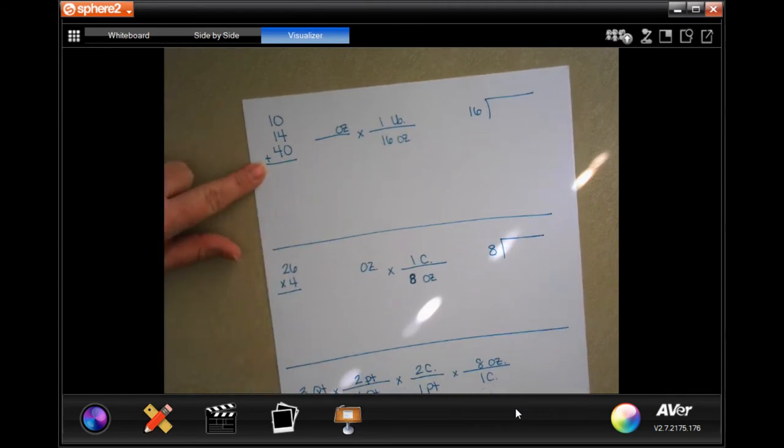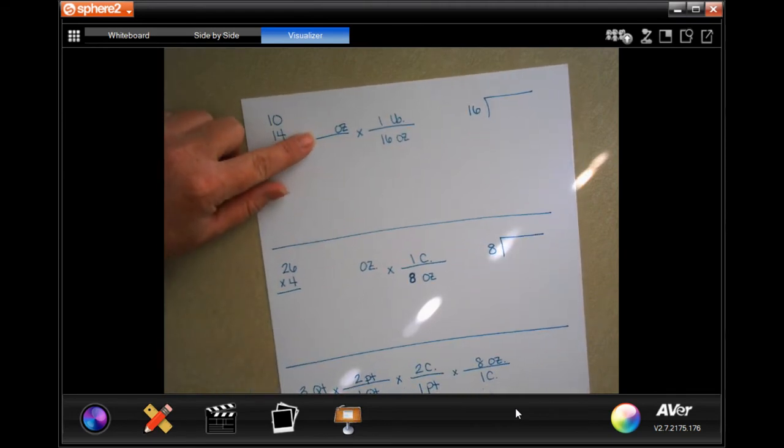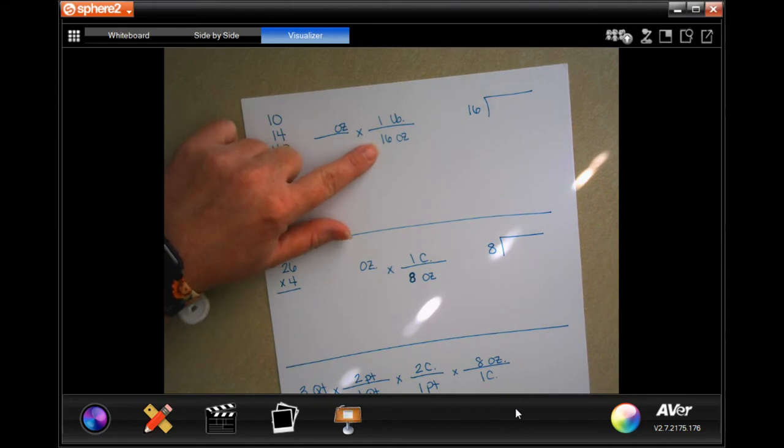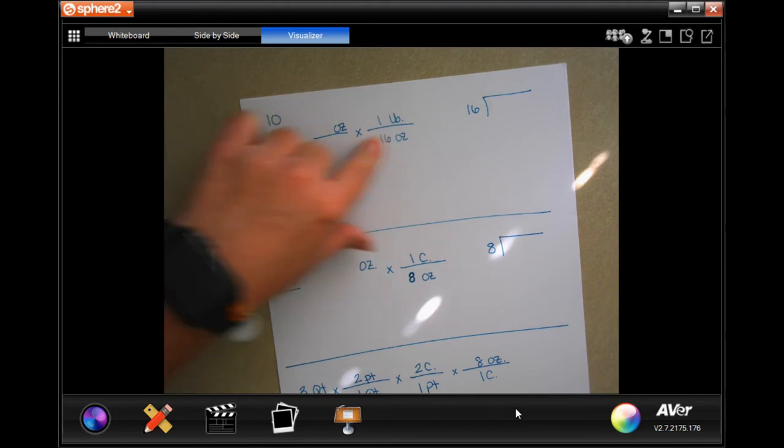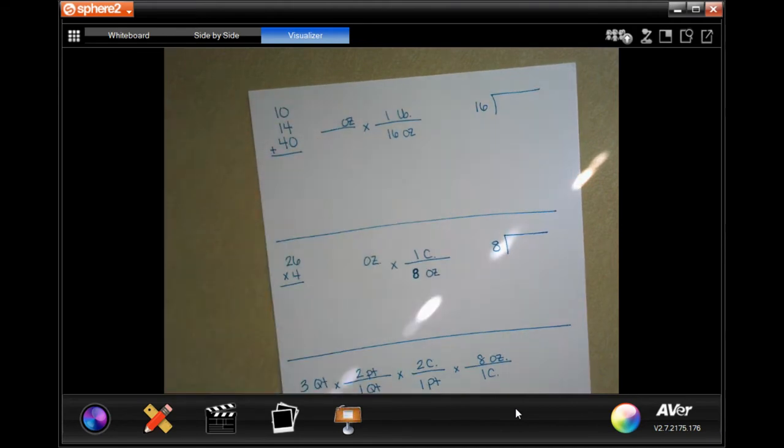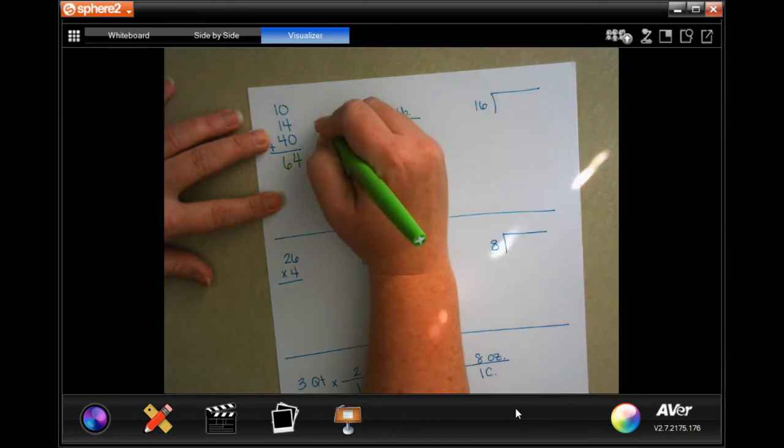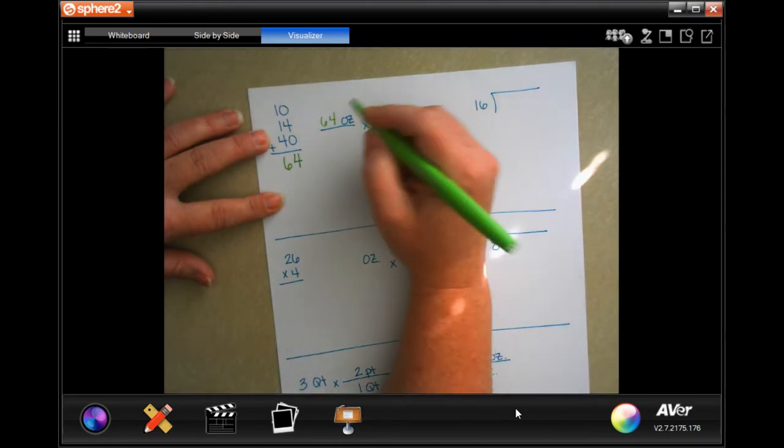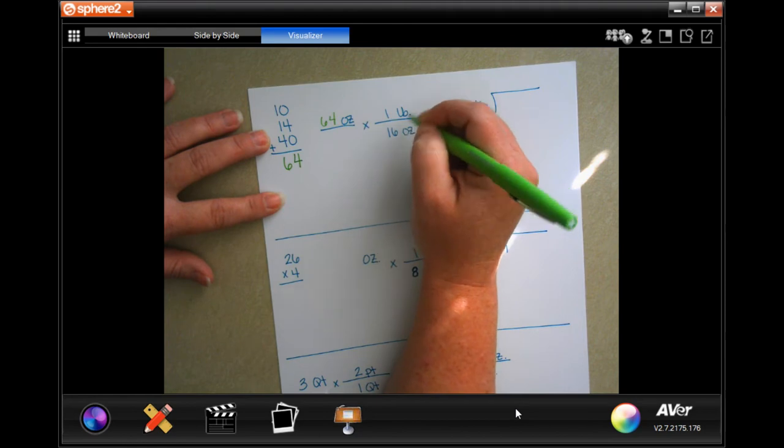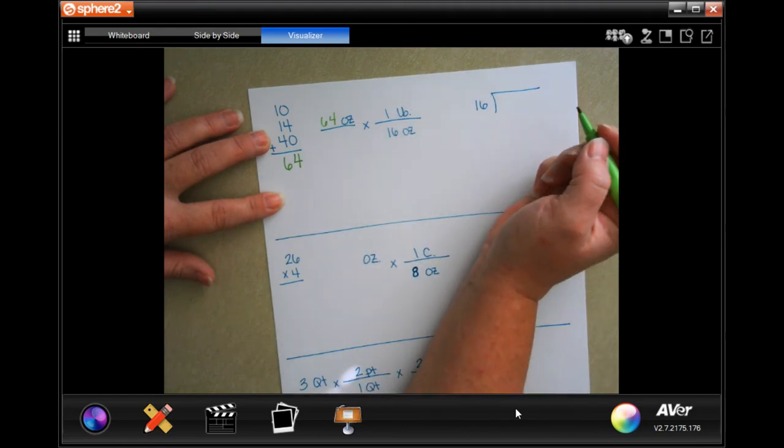Okay, we're going to add up how many ounces it is. We're going to put that number of ounces here, and then we're going to divide by 16 to find out. All right, let's do this. So first, 10 plus 14 plus 40 equals 64 ounces, where 16 ounces is one pound.